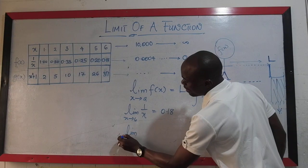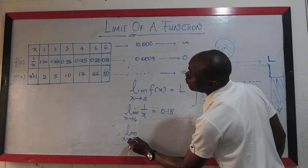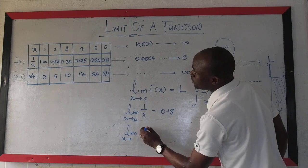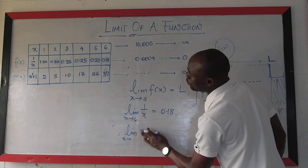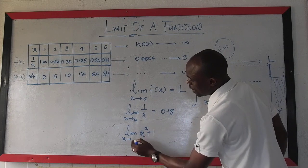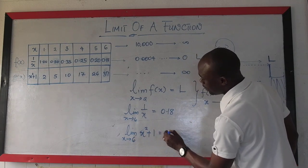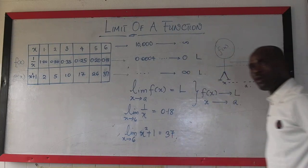limit of 1 over x as x approaches 6 is simply 0.18. On the other hand, limit of, generally, f of x as x approaches infinity, sorry, of g of x, which is x squared plus 1,